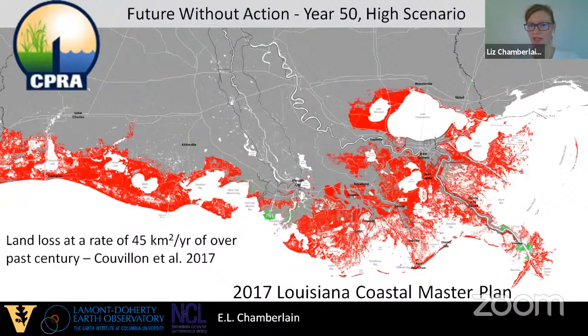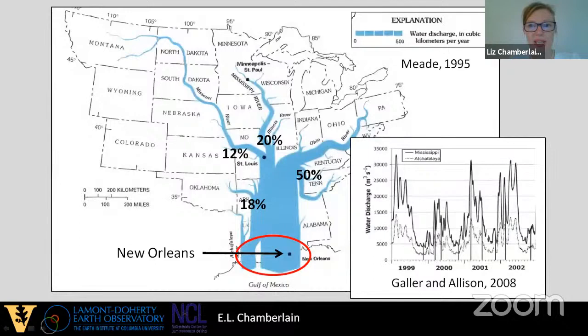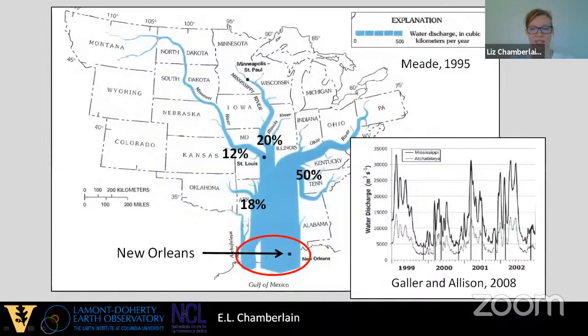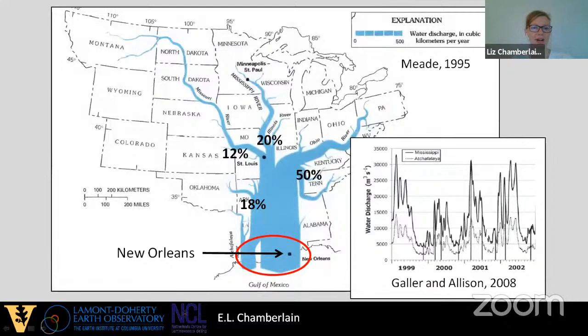The Mississippi River drains a large portion of North America. A lot of water comes from the Ohio River, but much of the sediment comes from the Great Plains via the Missouri River. It all converges at New Orleans, with highly seasonal discharge: large peaks generally in spring, sometimes in fall, and less discharge in winter. This is a big system with a lot of water and sediment — highly seasonal, which makes it incredibly difficult to engineer and manage safely.